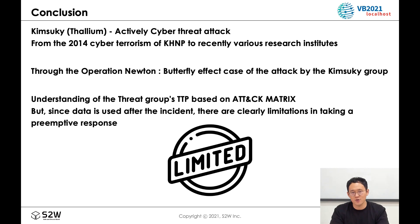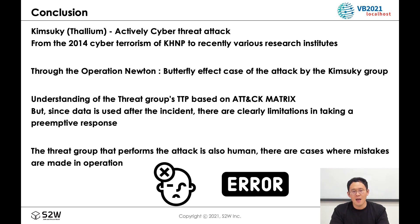Since data is used after the incident, there are clearly limitations in taking pre-emptive responses. However, as a result of trying various methods to overcome this limitation, the bug in AppleSeed's C2 communication was found. And based on this bug, we are able to actively track the Kimsuky group. Since the threat group that forms the attack is also human, there are cases where mistakes are made in operation or development. For the threat hunter who tracks and analyzes, it is worth paying attention to these mistakes, because they become a clue or a point for taking a pre-emptive response.